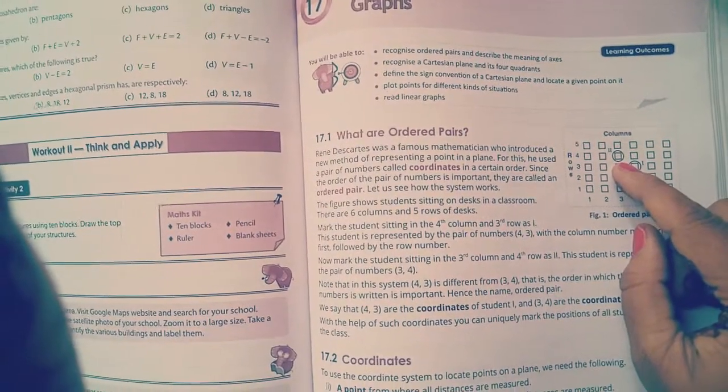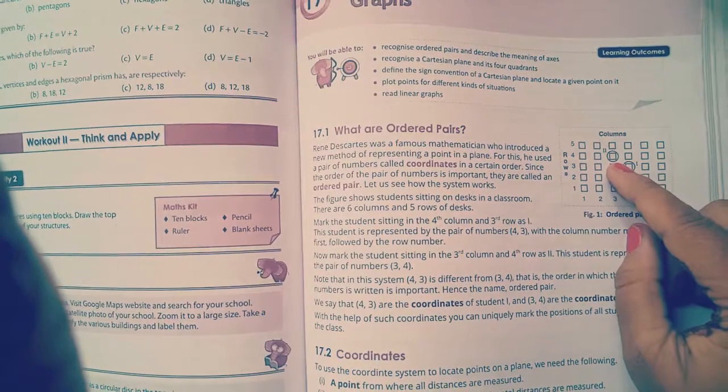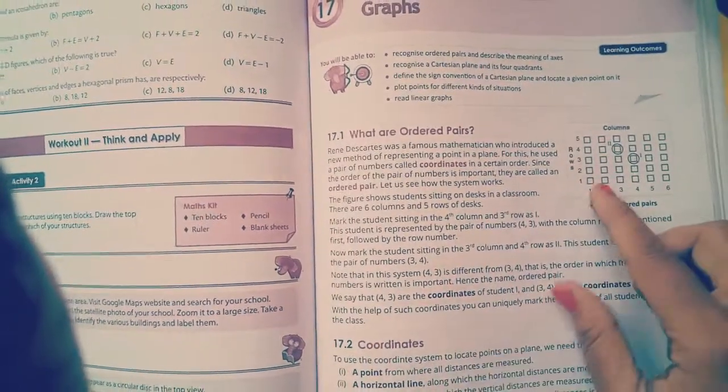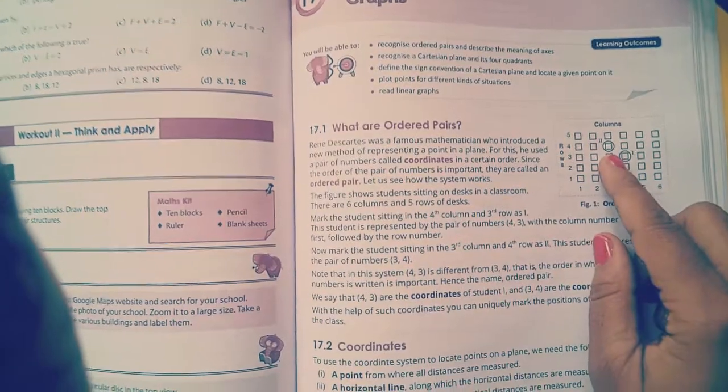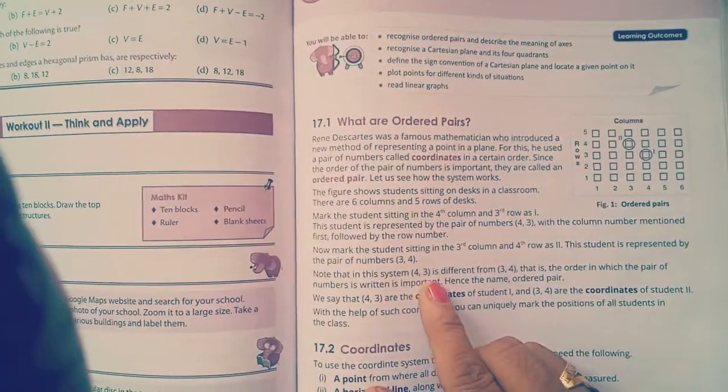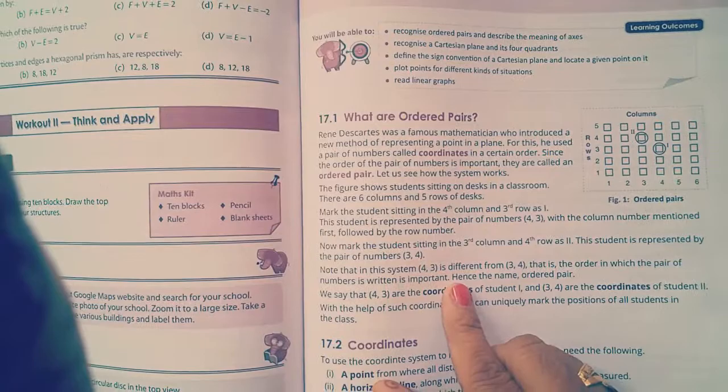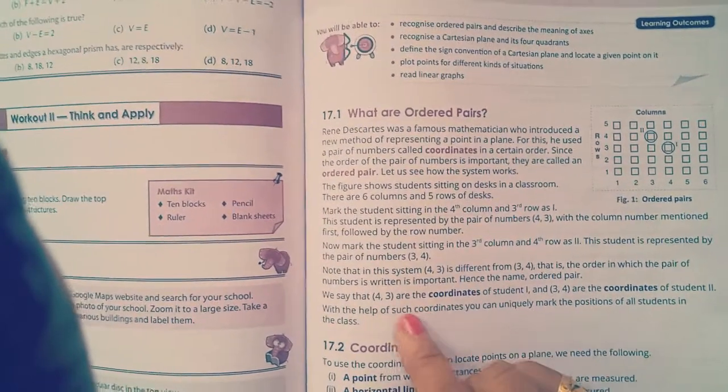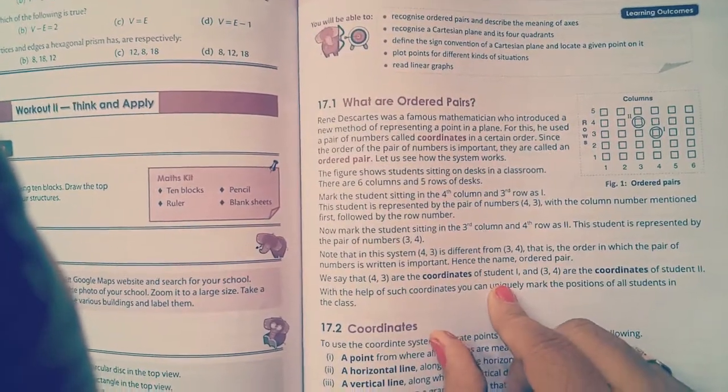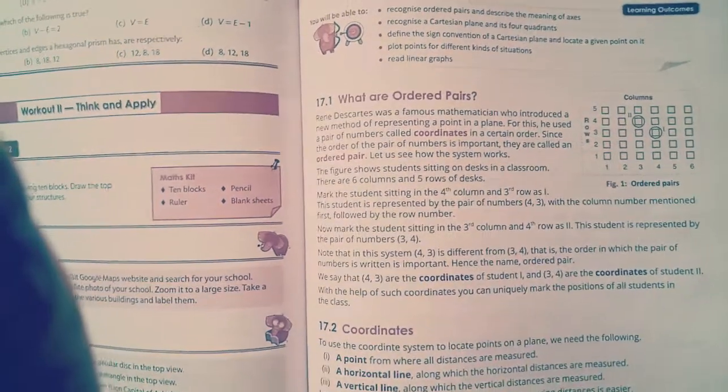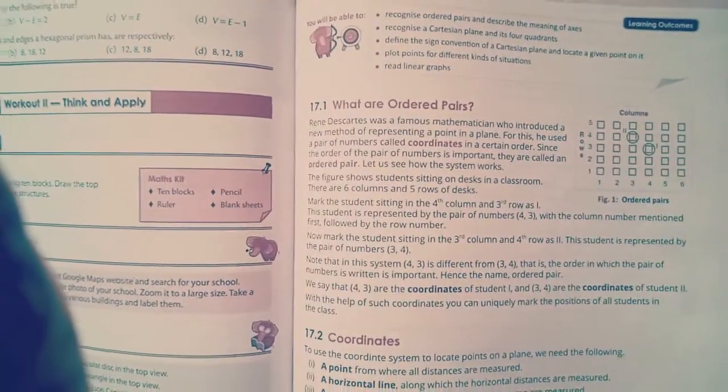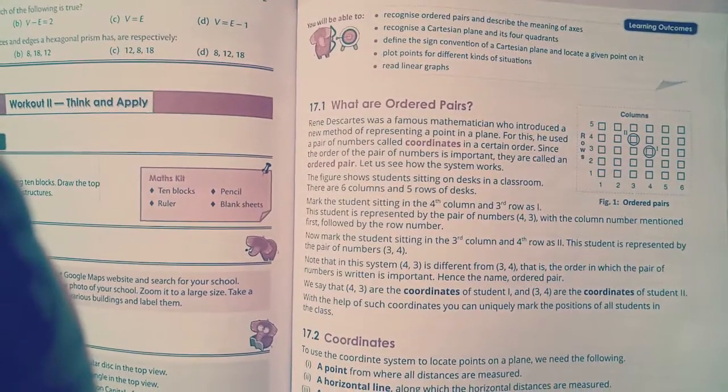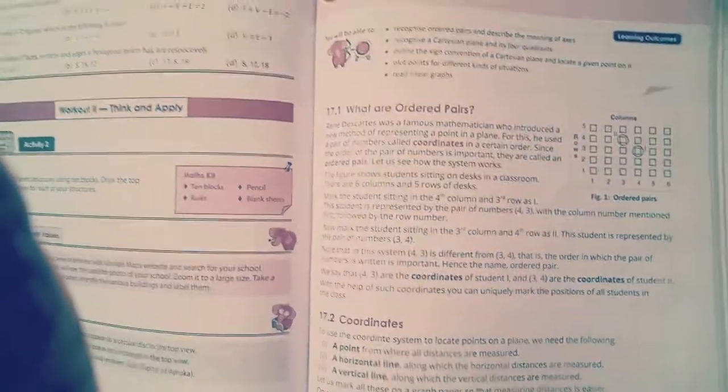Similarly, maps are used to find the location. So here, like this fourth row and third column, we will write 4, 3 as the coordinates. These are the coordinates of the student or me that I am using. Similarly, graphs are used to find the location of a point. So we will draw the graph.